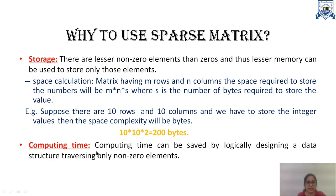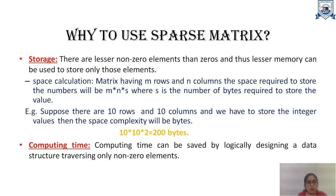So it is a huge help if we eliminate the zero values and represent only the non-zero elements, saving a large amount of space. Next is computing time. Because non-zero elements are what matter, a large amount of time can be saved by traversing only the non-zero elements instead of traversing every single element — zero and non-zero — in order to finally access a non-zero entity. Computing time is also saved by discarding zero valued elements.